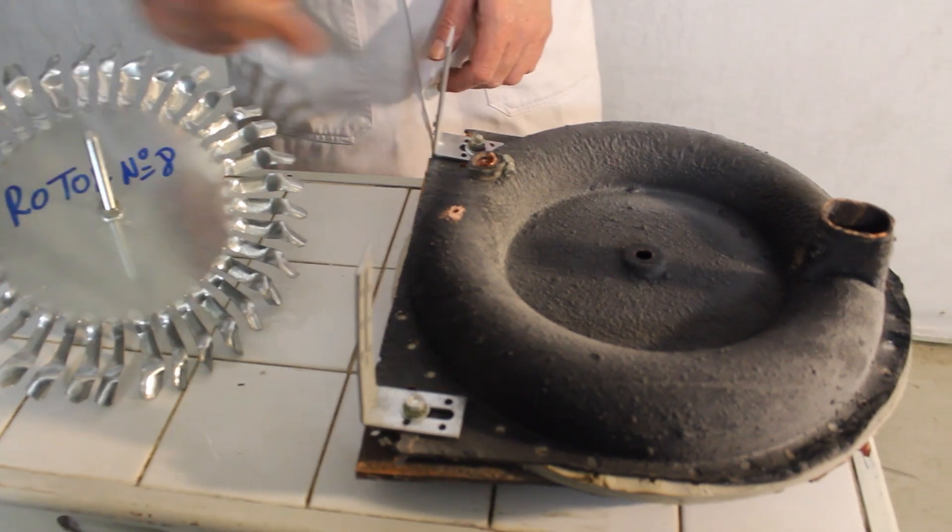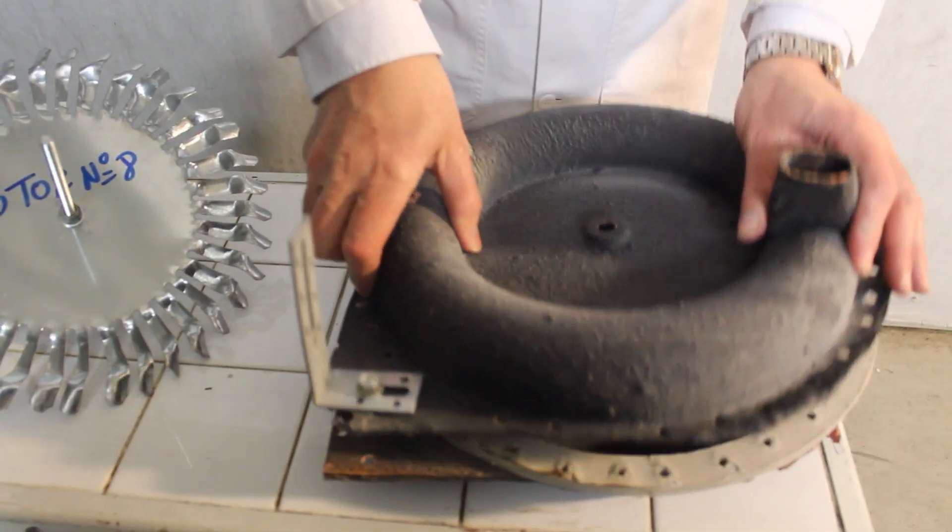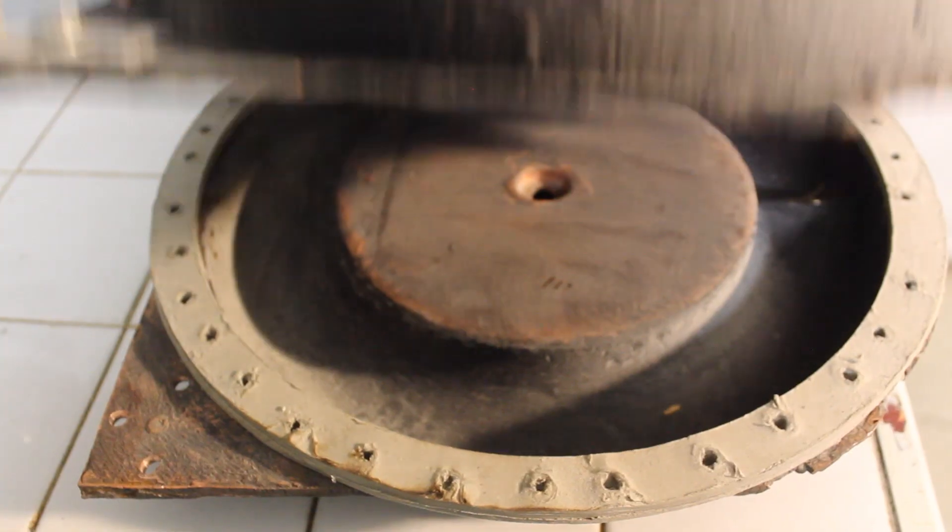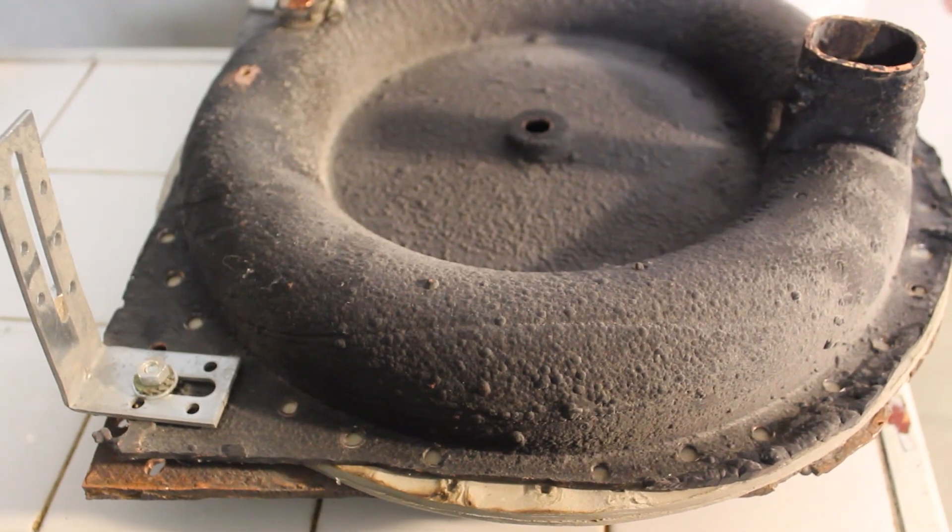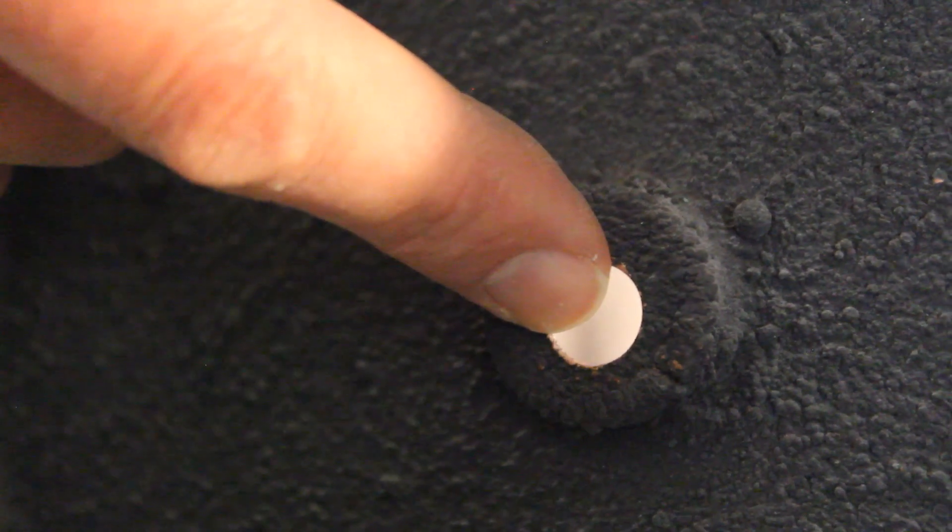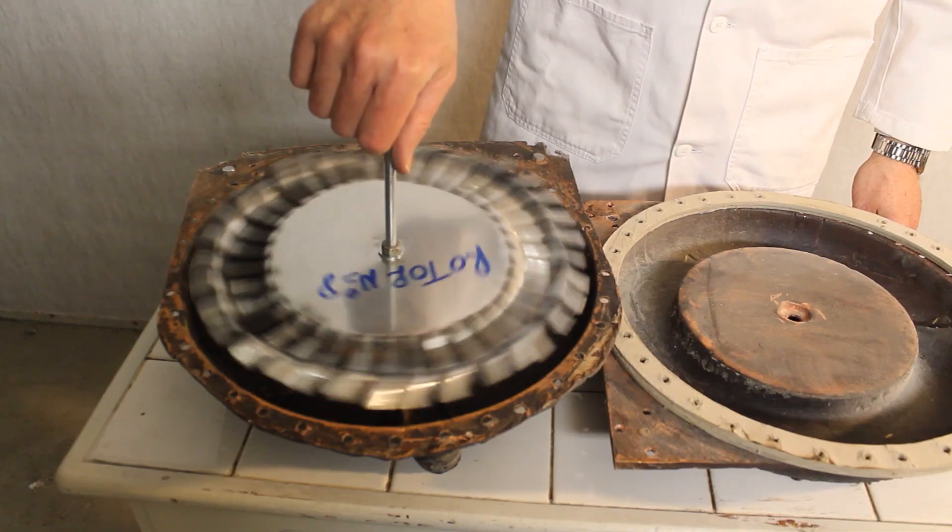The stator is composed of two half stators which form a torus. The only point of contact between the rotor and the stator is here, at the level of the ball bearings. There is no friction between the rotor and the stator, so there are no energy losses.